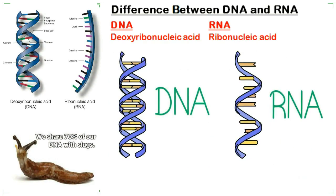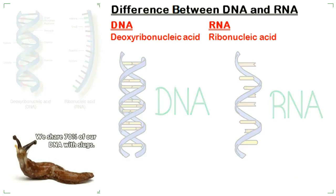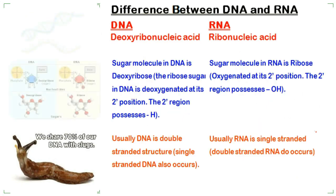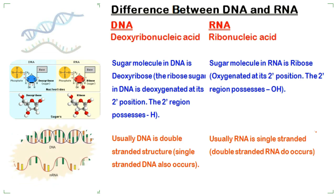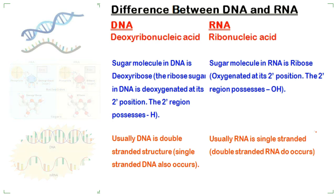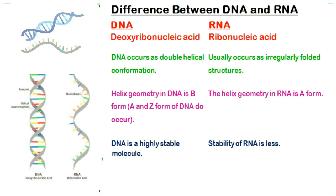DNA is deoxyribonucleic acid while RNA is ribonucleic acid. The sugar molecule in DNA is deoxyribose, while the sugar molecule in RNA is ribose. Usually DNA is a double-stranded structure, while RNA is single-stranded.